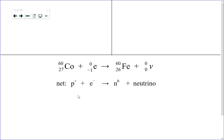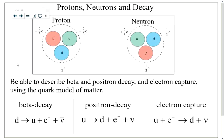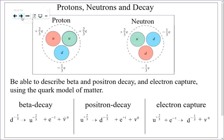For electron capture, a proton (up-up-down) and an electron get together, producing a neutron (up-down-down) and a neutrino — an up quark changes to a down quark by the addition of the electron. If you want to be precise, you can rewrite these changes with charges: a down quark is −1/3 elementary charge, an up quark is +2/3, an electron is −1, and an anti-neutrino is 0. These represent the net quark-level changes during beta decay, positron decay, and electron capture. That's it for this unit and for the course review — good luck with everything.